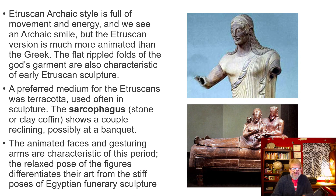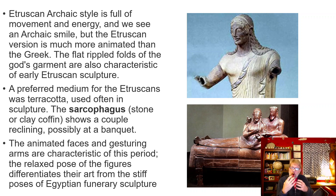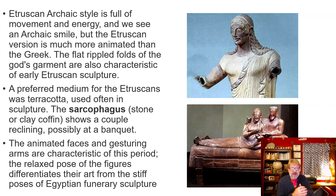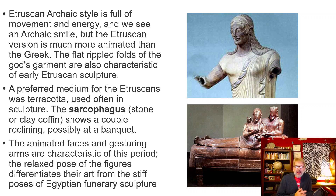The Etruscan archaic style is full of movement and energy. We see the archaic smile, but the Etruscan version is much more animated than the Greek — the mouth is sort of open rather than that stiff smile. The Etruscan archaic is a little more naturalized; they advanced a little faster than the Greeks did. The flat rippled folds of the garment are also characteristic of early Etruscan sculpture. The preferred medium for the Etruscans was terracotta — a red clay you're probably familiar with from plant pots.